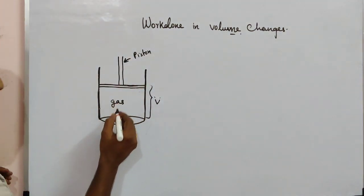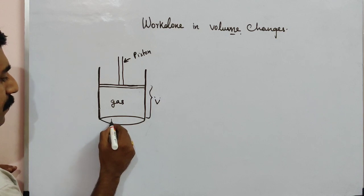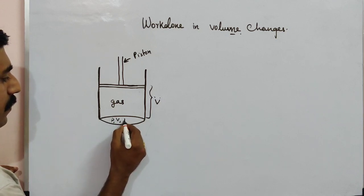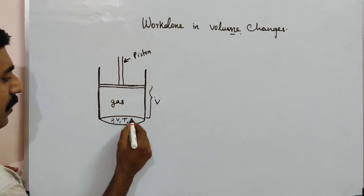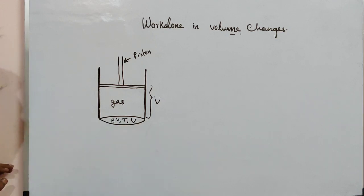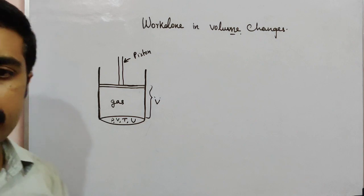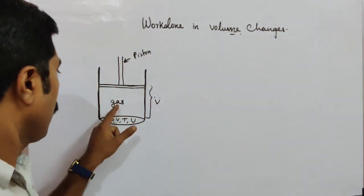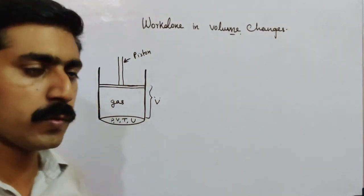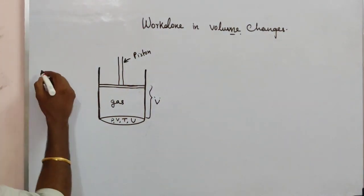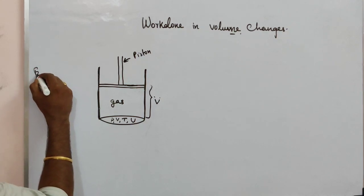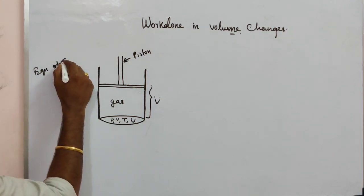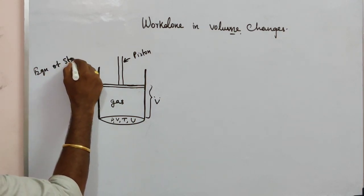So here, the state variables are: pressure, volume, temperature, and internal energy. The gas is in an equilibrium state, so we can use the equation of state.